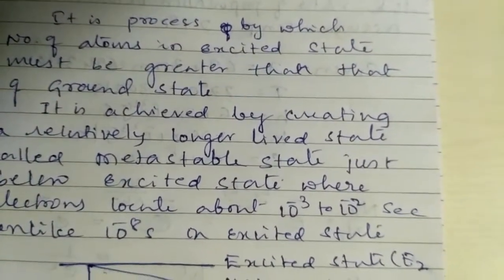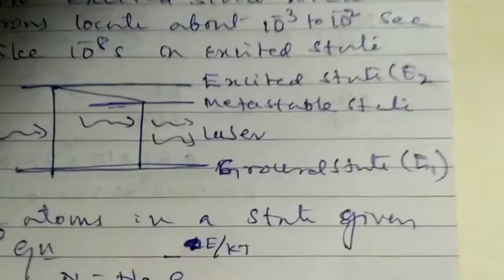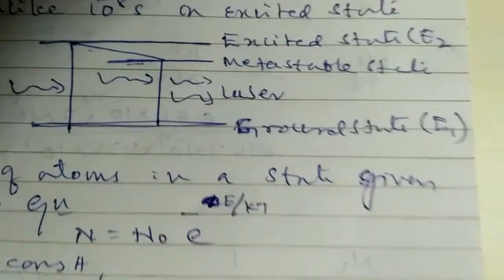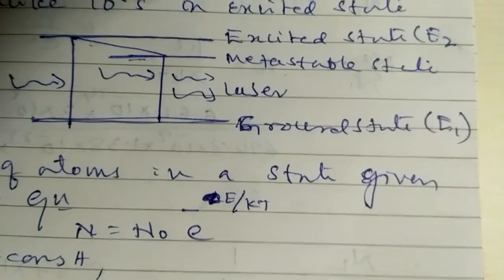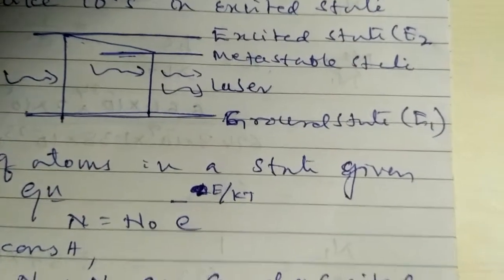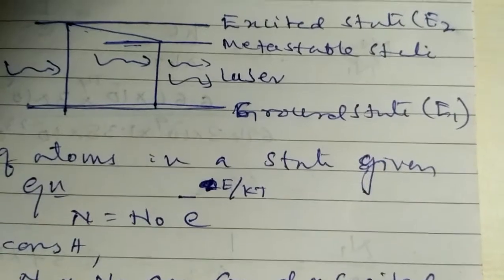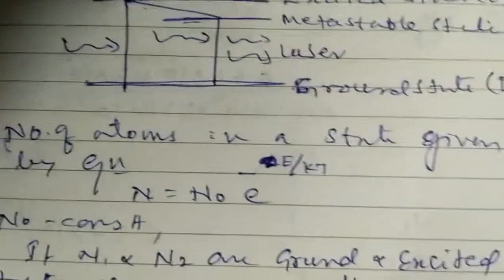The number of atoms in an energy state is given by the equation N = N0 * e^(-E/kT), where E is the energy state, k is the Boltzmann constant, T is temperature, and N0 is a constant.